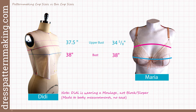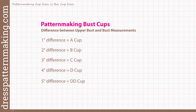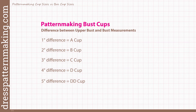For pattern making bust cups, Didi is an A cup or less than an A cup, and I am a C cup. For drafting the bodice block, you use the difference between your upper bust and bust to determine your pattern making cup size: one inch difference is an A cup, two inches is a B cup, three inches is a C cup, and so on. If you're between sizes, don't worry about that now.